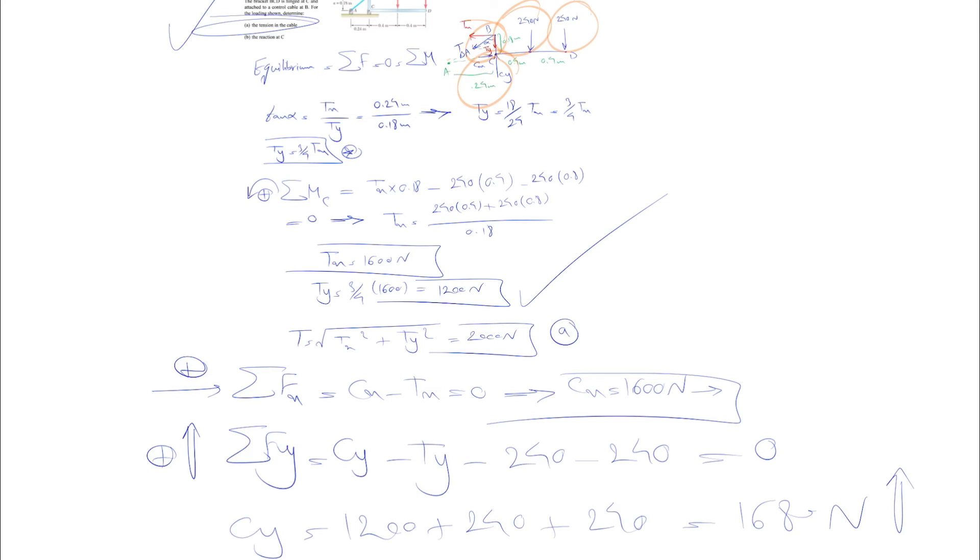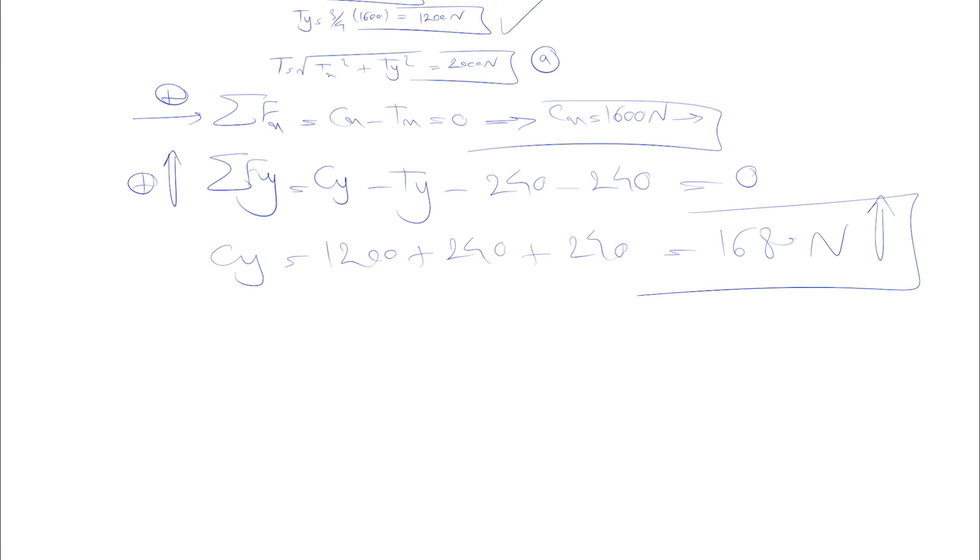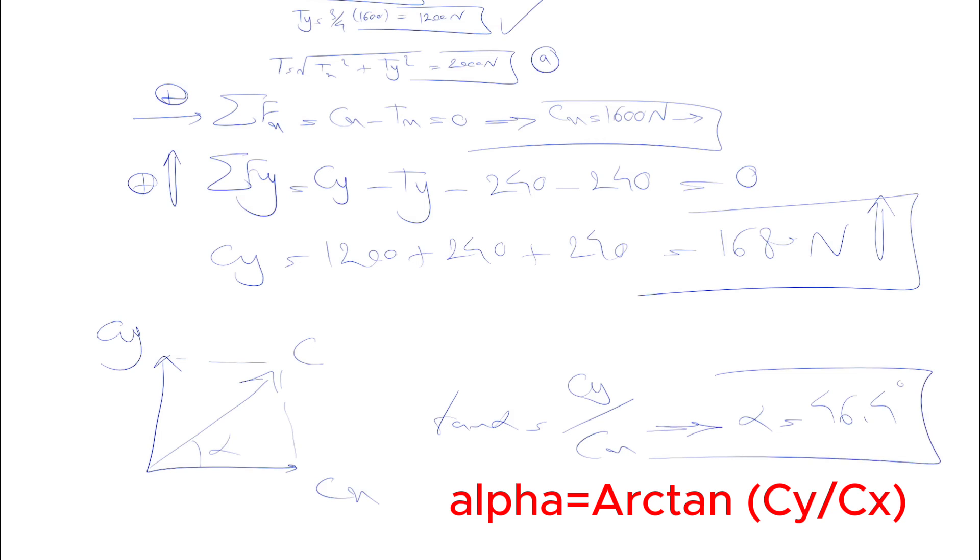Now we found the Cx and Cy. If you want to look at the angle that it's making, we found Cy here upward and we found our Cx 1600. If we call this angle alpha, tangent of alpha will be Cy over Cx, and we can find alpha based on this, which is 46.4 degrees.